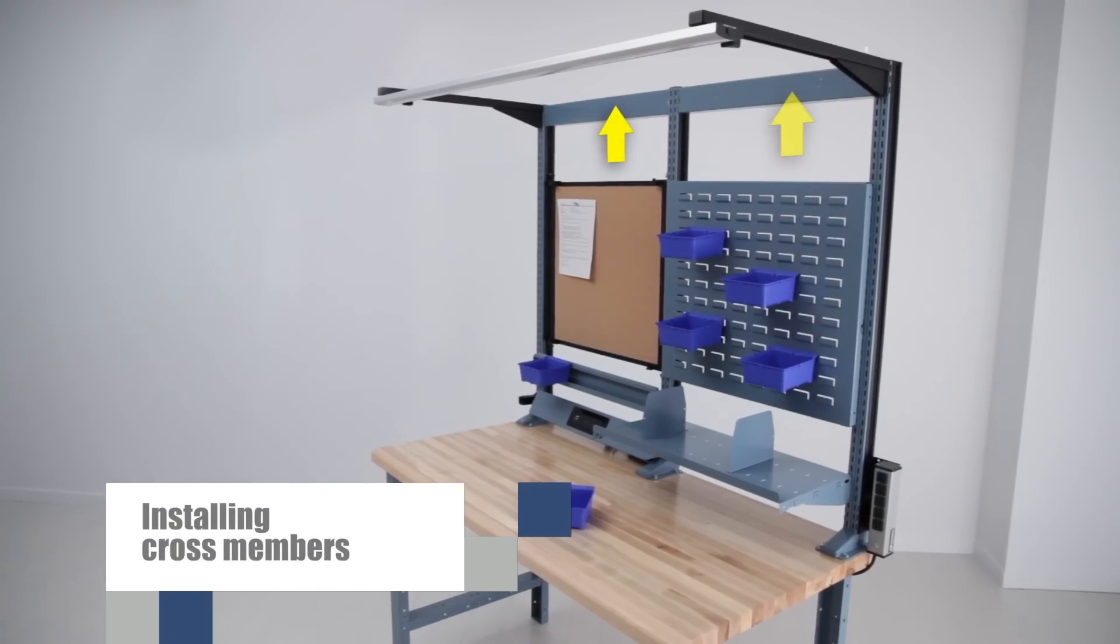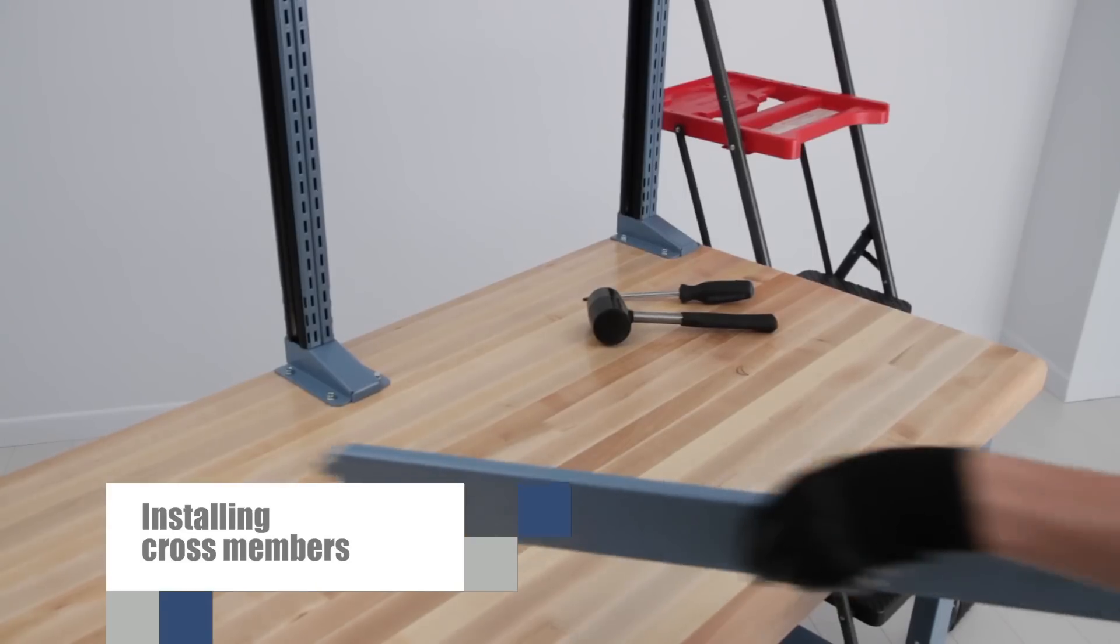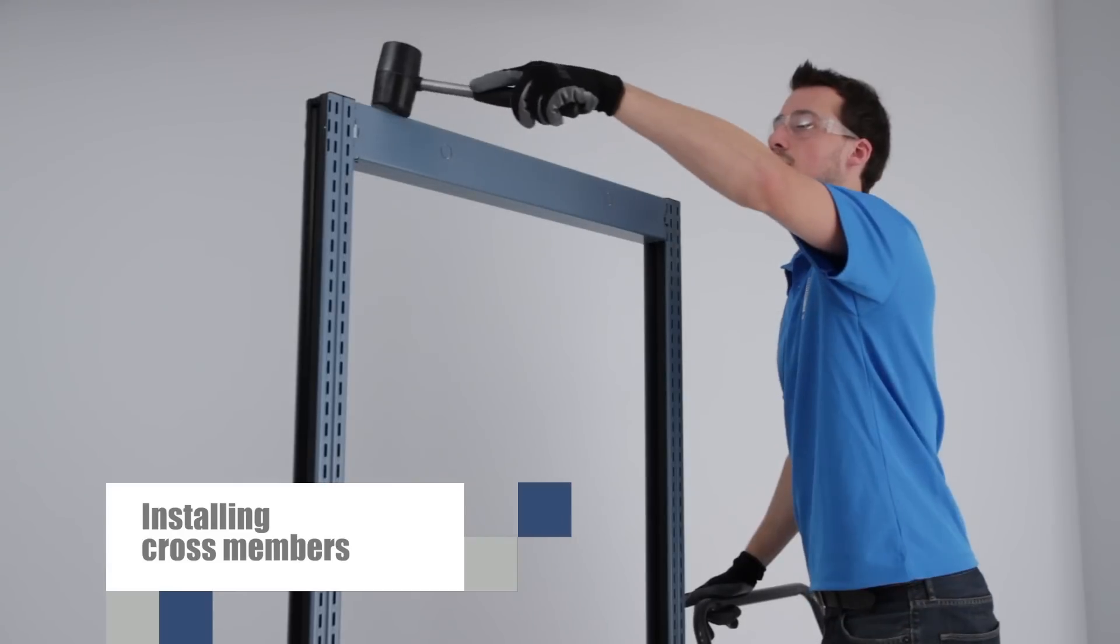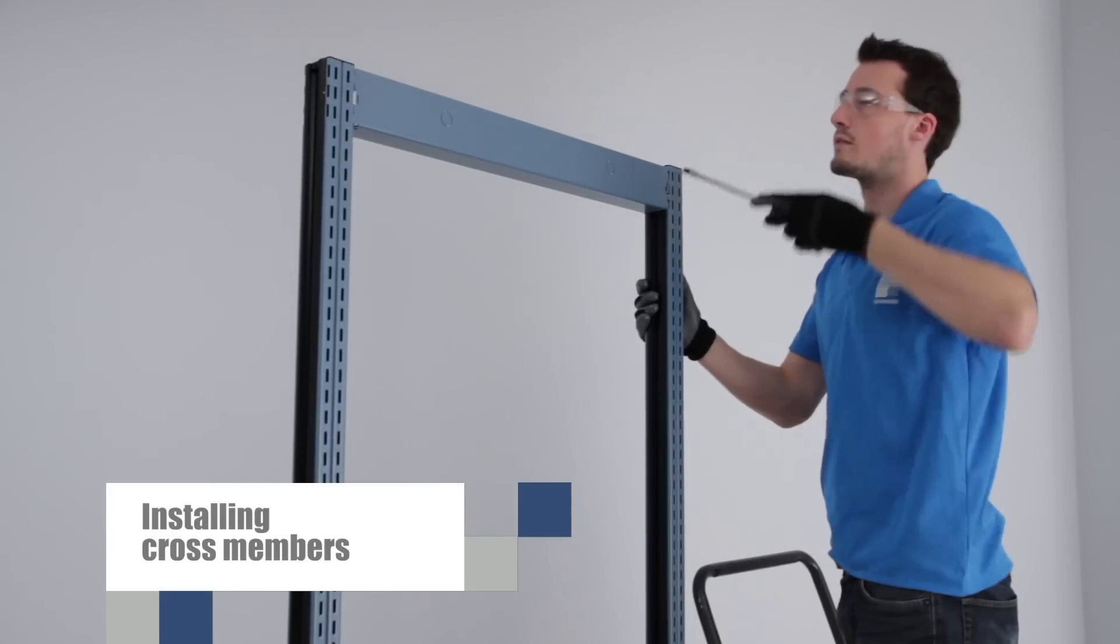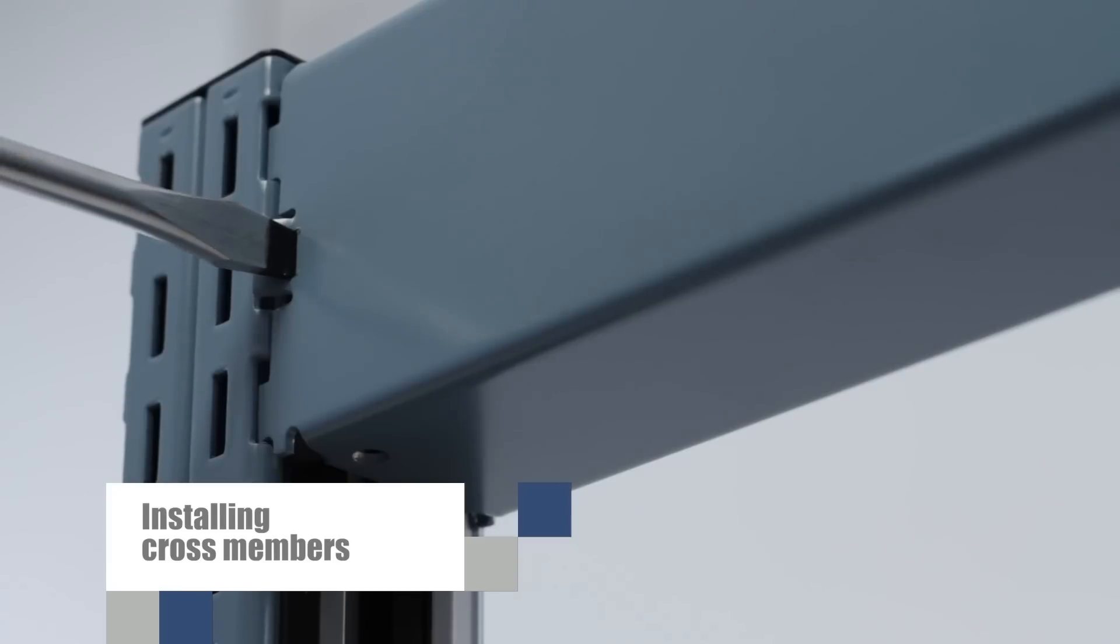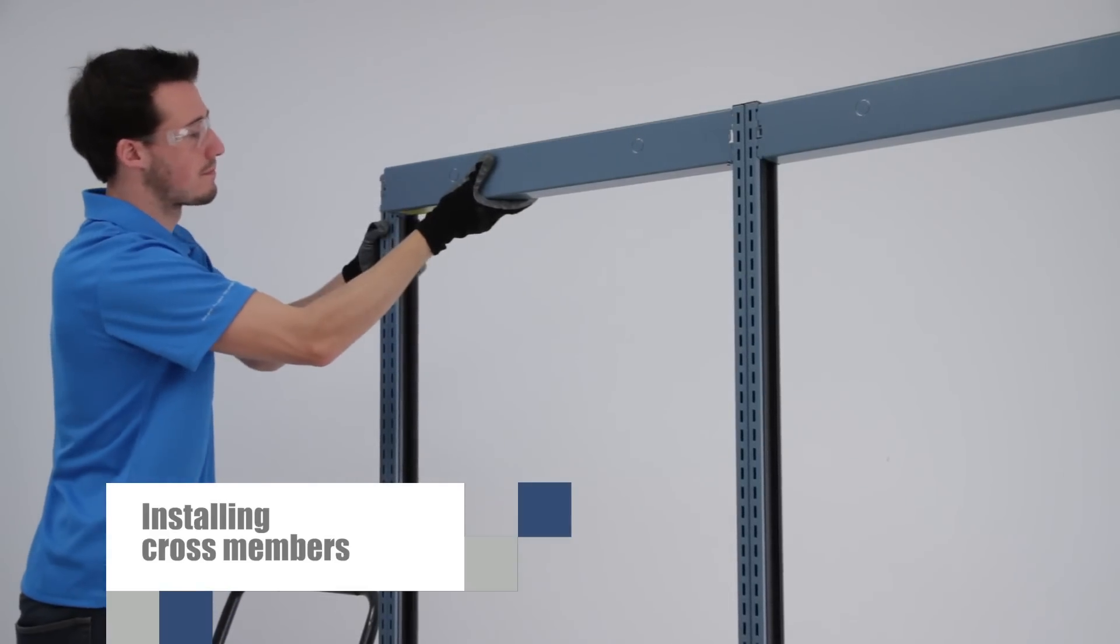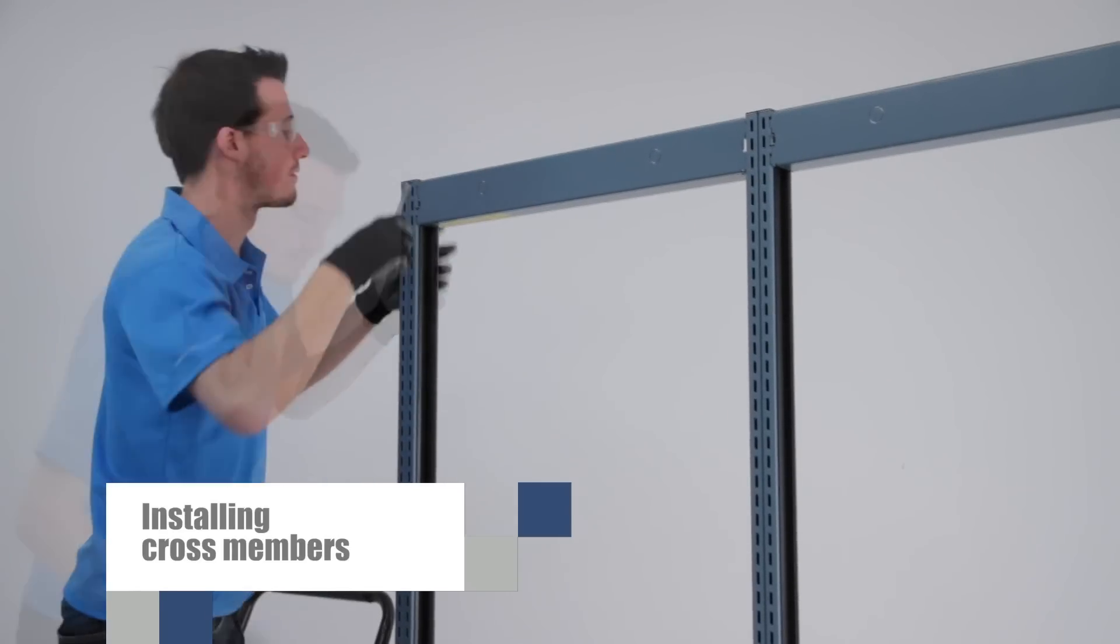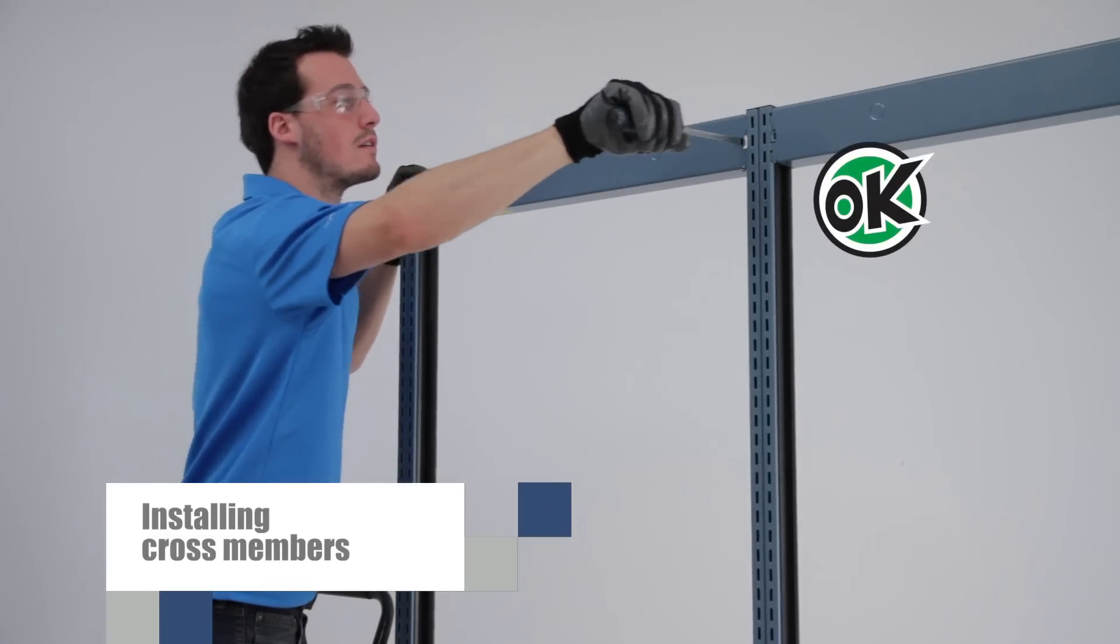You are now ready to install the crossmembers at the top of the uprights. As shown, begin by folding the security tab at each end. Insert the crossmembers into the uprights using the hooks. Then unfold the tabs in order to secure the hooks in place. There you go. Your frame is now correctly installed.